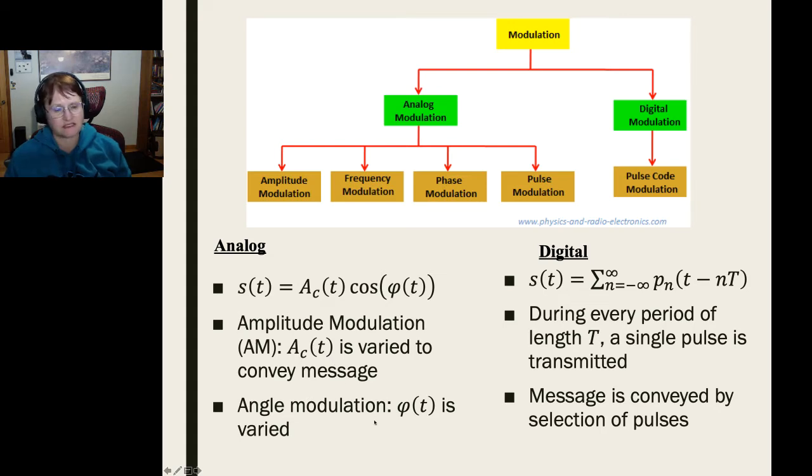In the other case is angle modulation. This is where you will change possibly the frequency with respect to the signal or its phase. Then we have digital communication systems where the data is set in a set of symbols, where each pulse denotes a symbol which has some meaning on the other end. During every pulse width, a single pulse is transmitted.